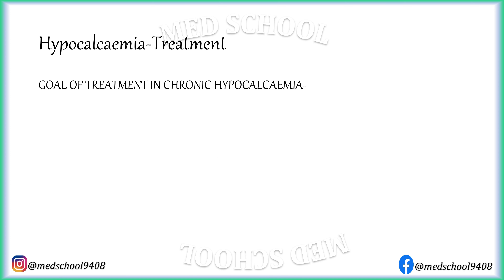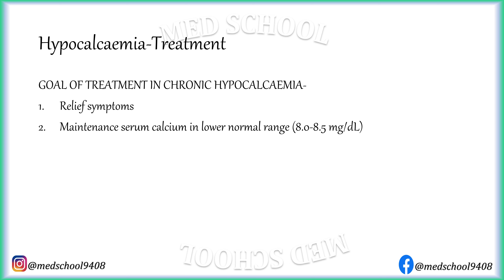Goals of treatment in chronic hypocalcemia are relief of symptoms, maintenance of serum calcium in the lower normal range, i.e., 8 to 8.5 mg per deciliter, and avoidance of hypercalciuria.